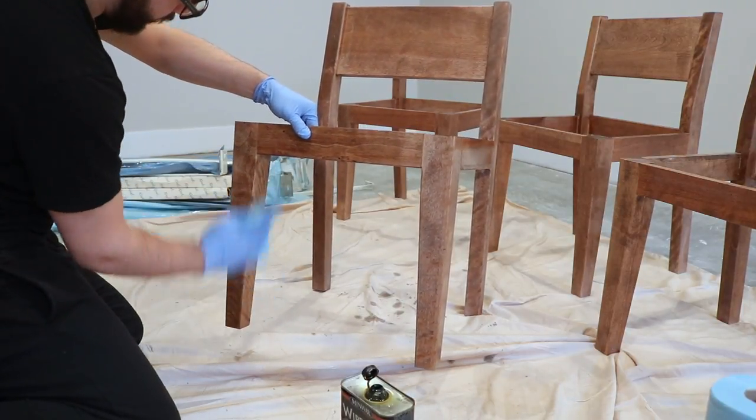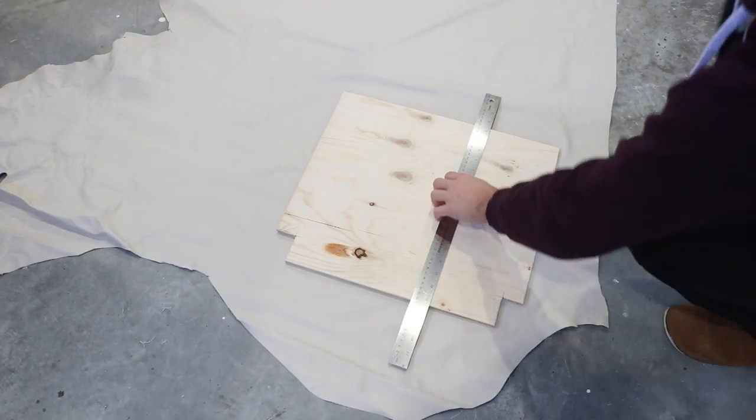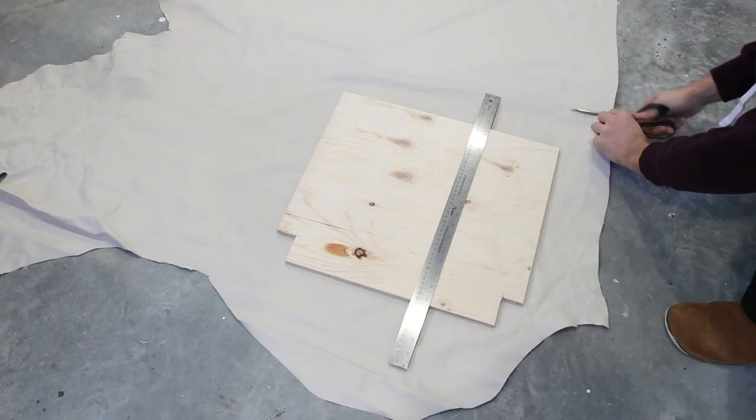While the frames dried, I started on upholstering the seat cushion. I cut out half inch plywood in the shape of the seat and used that to measure the leather.